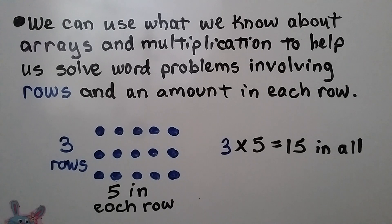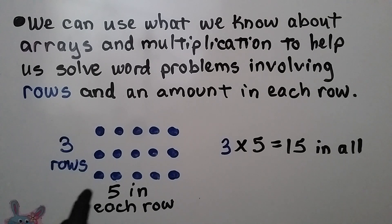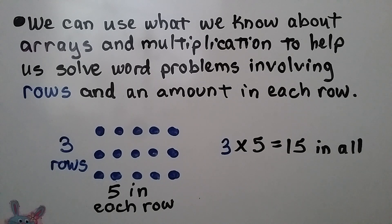We can use what we know about arrays and multiplication to help us solve word problems involving rows and an amount in each row. Remember, rows go across. So here we have three rows and there are five in each row, so we have three times five, which is equal to fifteen in all.